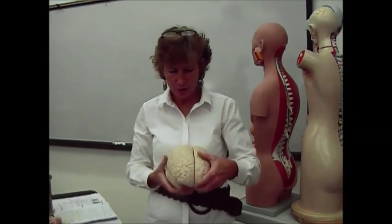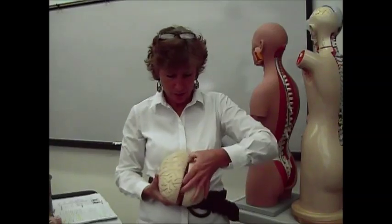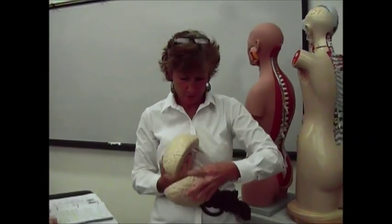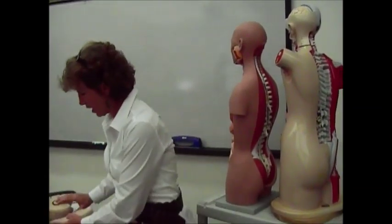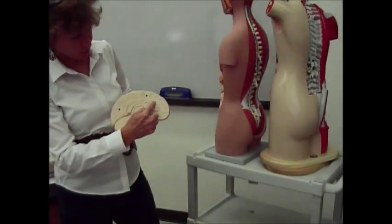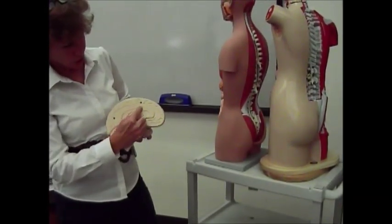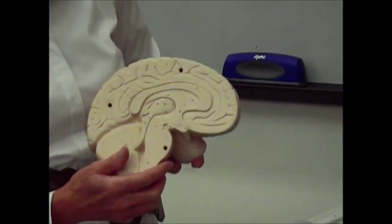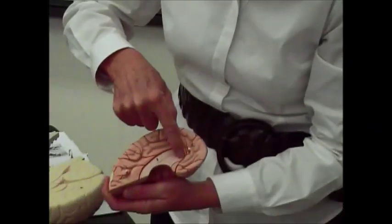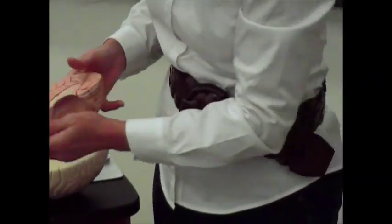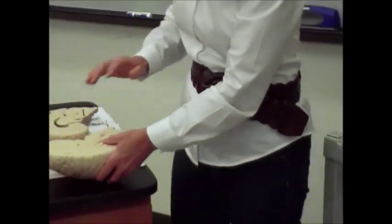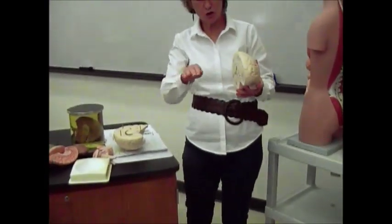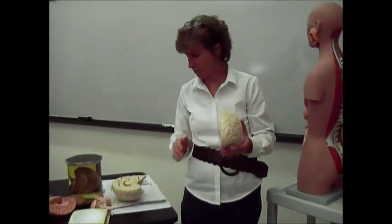The two hemispheres are actually connected together. If I open this up, you can see that there's a cord of fibers known as the corpus callosum. That connects the two cerebral hemispheres together — it's just the point of crossover between the right and left cerebral hemispheres.